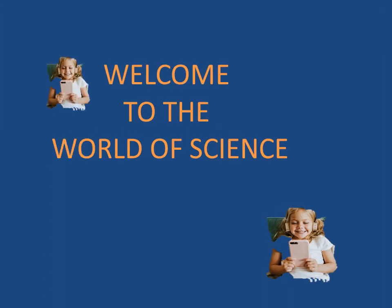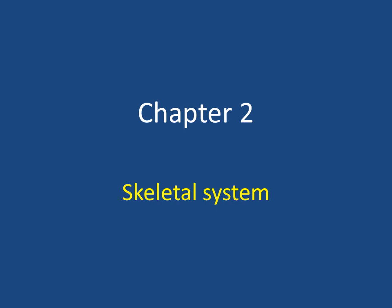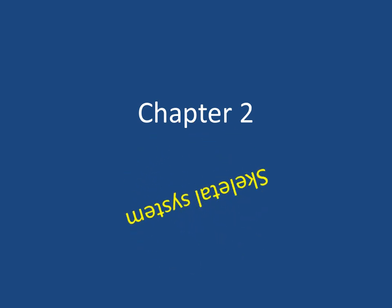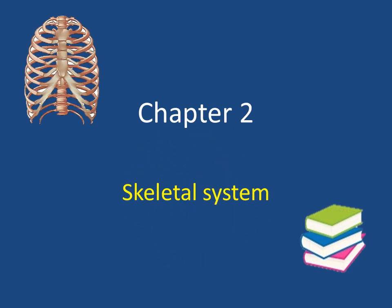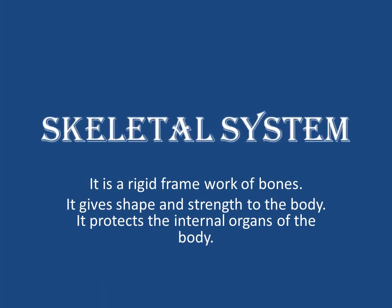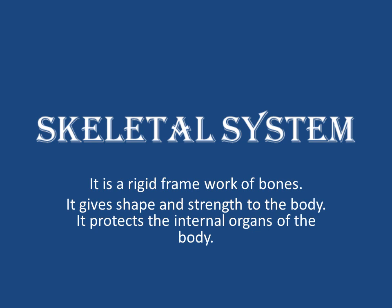Welcome to the world of science. Today we are going to study Chapter 2: The Skeletal System. Our body performs different activities by the coordination of different organ systems. One such organ system is the skeletal system. It works in coordination with the muscular system. In this session we will study about different types of bones and their functions.